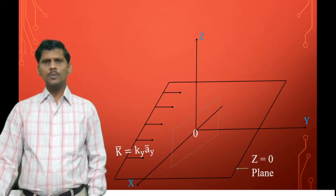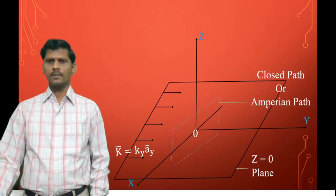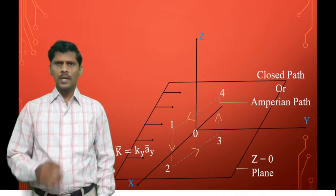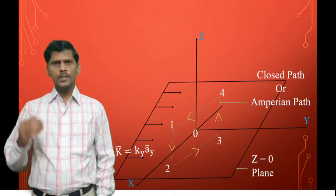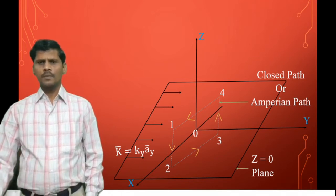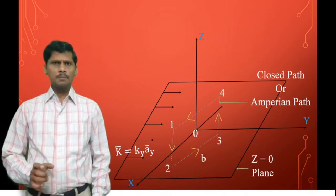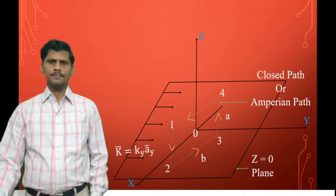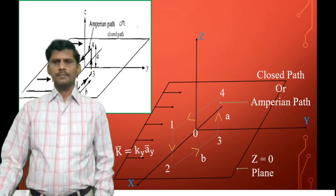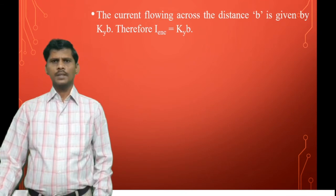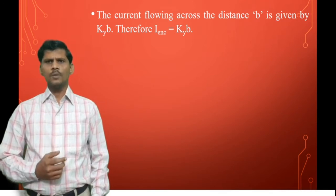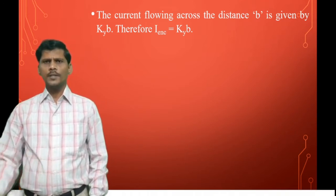Consider a closed path or Amperian path as shown in the figure. The closed path is 1→2, 2→3, 3→4, 4→1. The width of the path is B and the height of the path is A. The current flowing across distance B is given by I_enclosed = Ky × B.